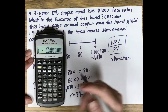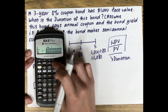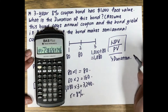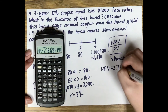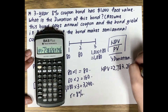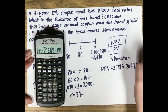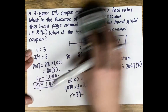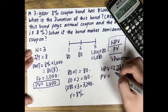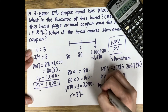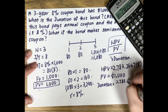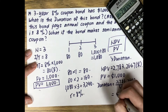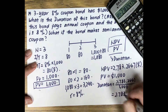Press the NPV button, enter a discount rate of 8%, press Enter and Down, then press Compute. The NPV is $2,783.26. Since the present value of the bond is $1,000, the duration is $2,783.26 divided by $1,000, which gives us 2.783 years.